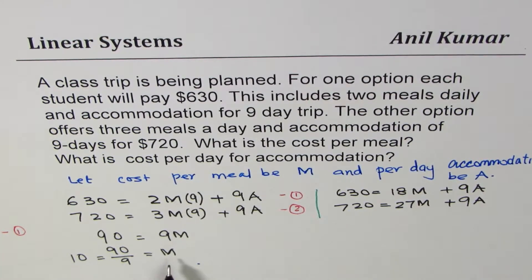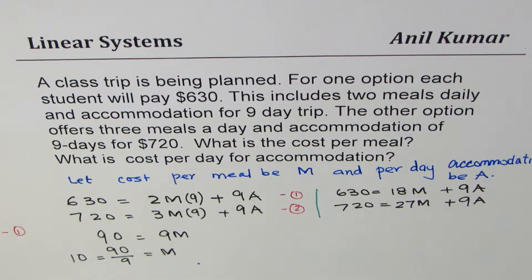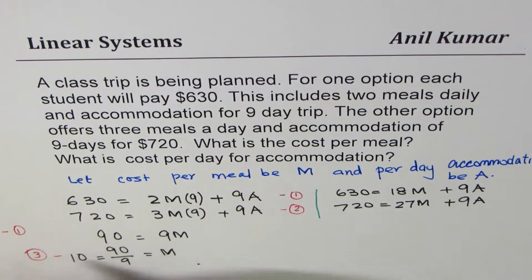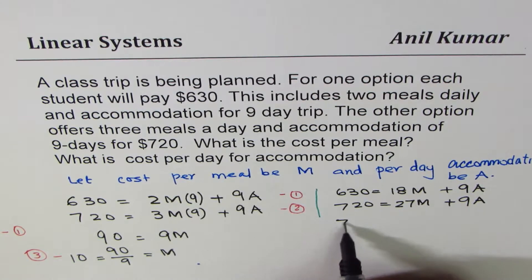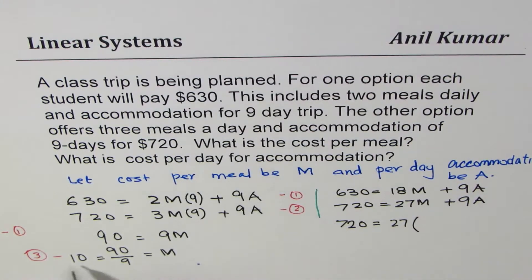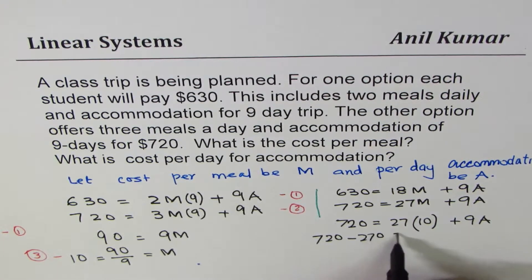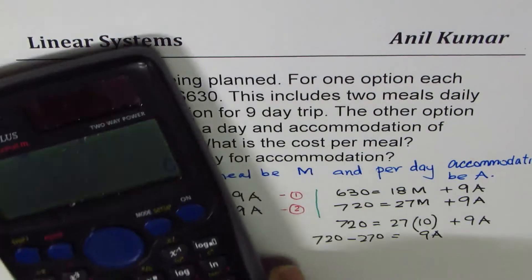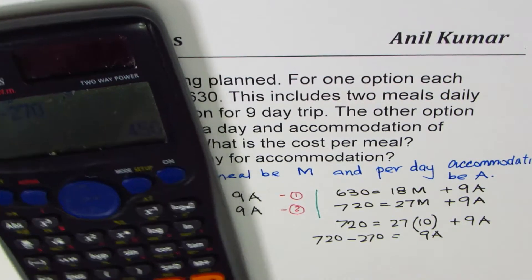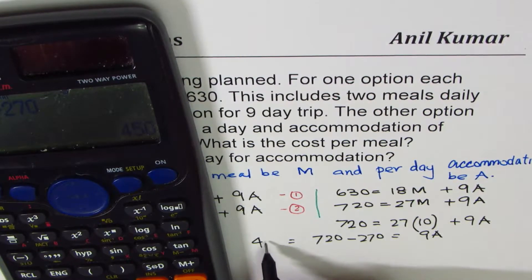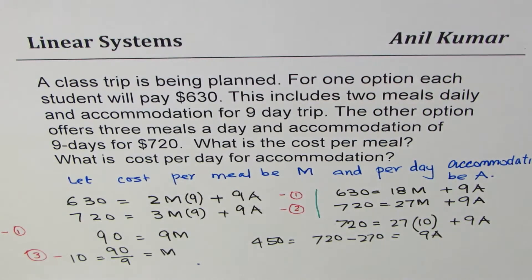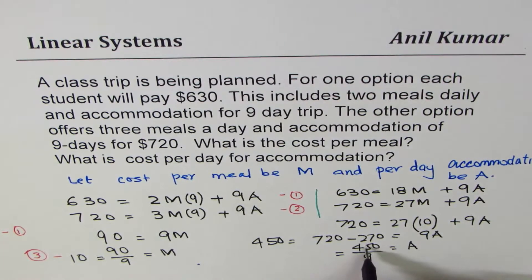To find the cost for accommodation, we substitute m = 10 into one of our equations. Using equation 2: 720 = 27 × 10 + 9a, so 720 = 270 + 9a. Therefore 9a = 720 − 270 = 450, and a = 450 ÷ 9 = 50. So accommodation is $50 per day.